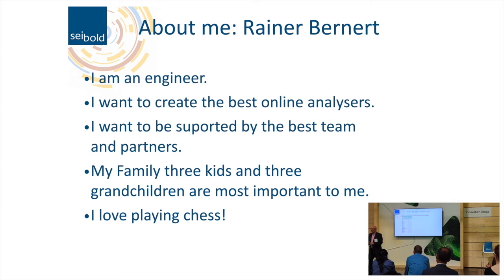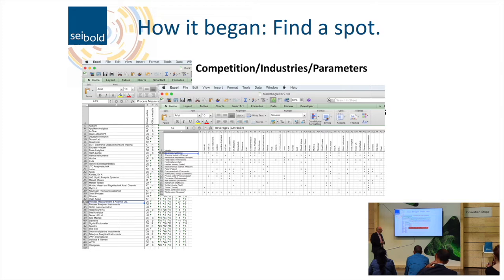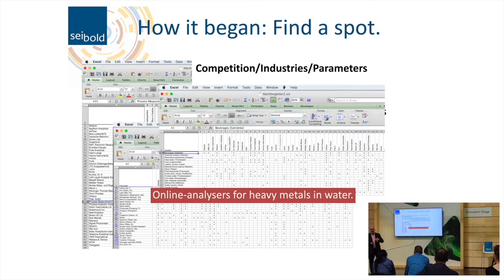How did it begin? It began when we looked for a focus — a niche where we can prosper. We looked at competition, industries, and parameters, and very soon we found that not that many companies are in the heavy metals area. Online measurements for heavy metals are tricky and complicated because you are very often confronted with interferences and dirty or high-loaded industrial waters. But this ensures that if you have a position in this market and do research and development, you are somehow protected against competition.